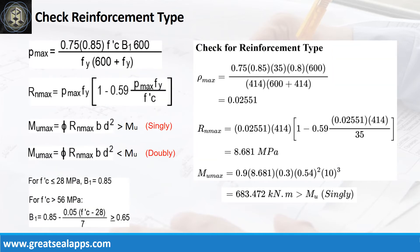The ρ max from the given design criteria is 0.02551. Then RN max is 8.681 MPa. And finally, the MU max is 683.472 kN·m, which is greater than 381.052 kN·m, confirming a singly reinforced beam design.